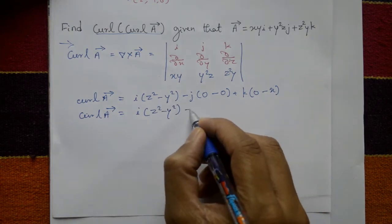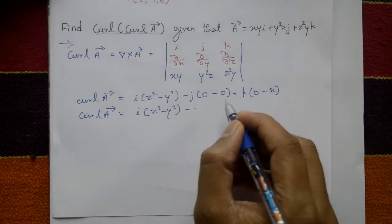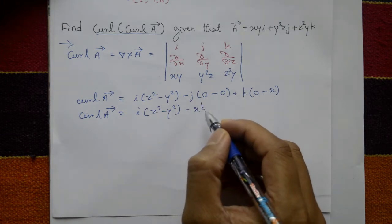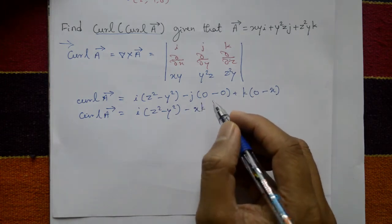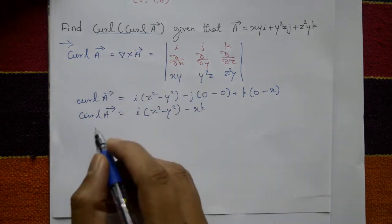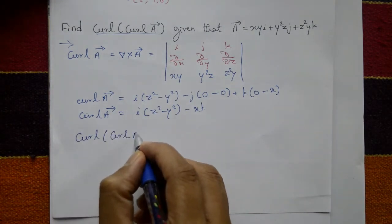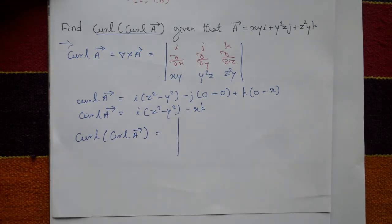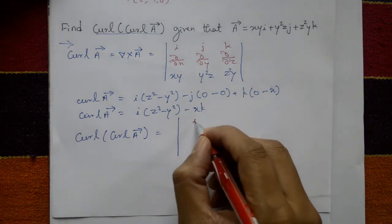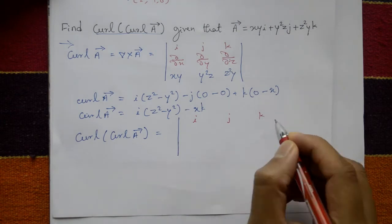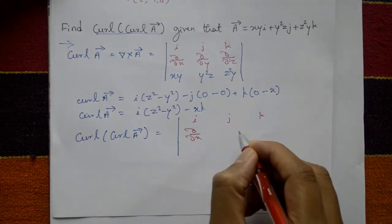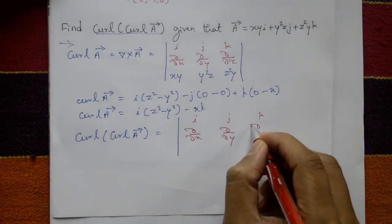Now curl of A is equal to i into z squared minus y squared, j is zero, and minus x k. Now curl of curl of A means again curl of A, means once again take determinant.